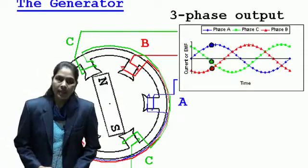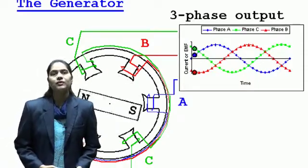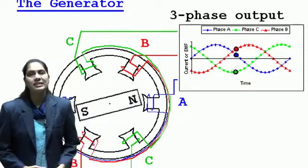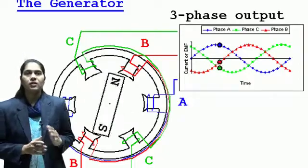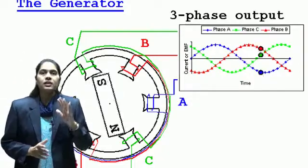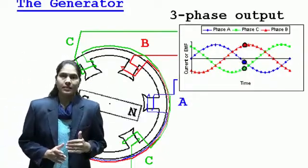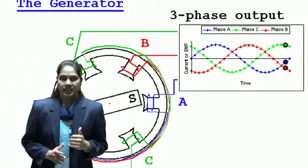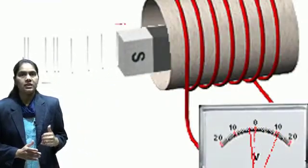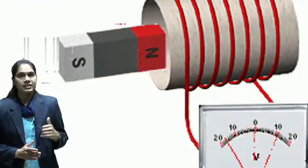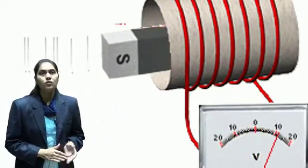For the production of rotating magnetic flux, we know that we require three-phase AC supply. First of all, we will discuss how three-phase AC supply gets generated. For that, we require to study Faraday's Law of Electromagnetic Induction.